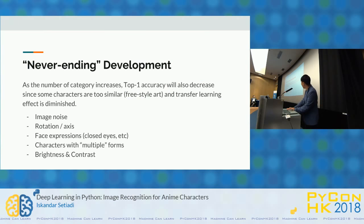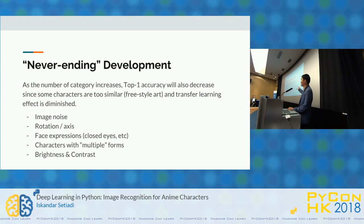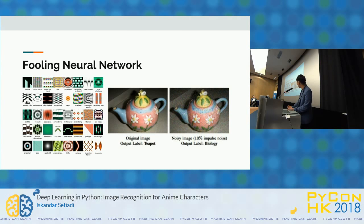Some remaining problems to consider in image recognition: noise in the image, rotation, face expressions. For this anime project specifically, the problem is how flexible the art style can be — illustrators draw characters however they like. Some characters even have the same name but multiple forms; for example, in the Fate series, Saber has many forms. There's also an interesting paper about fooling neural networks: both photos look like a teapot to humans, but when you add some noise to the image, the model gives a random, nonsensical classification.